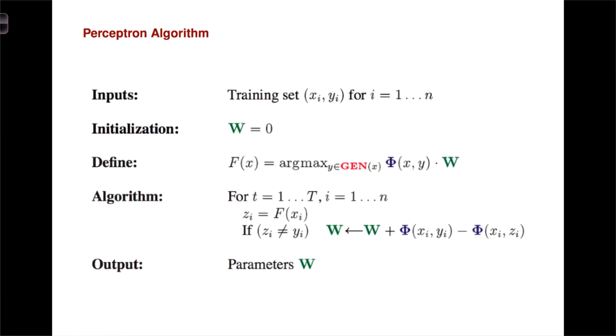And so now the perceptron algorithm looks a little bit different. Now our training set, the labels are going to be sequences. We're still going to initialize our weight vector with zero. And so now we're going to define this function f that does the search over possible labels and gives us the argmax label, the label that gives us the highest score.